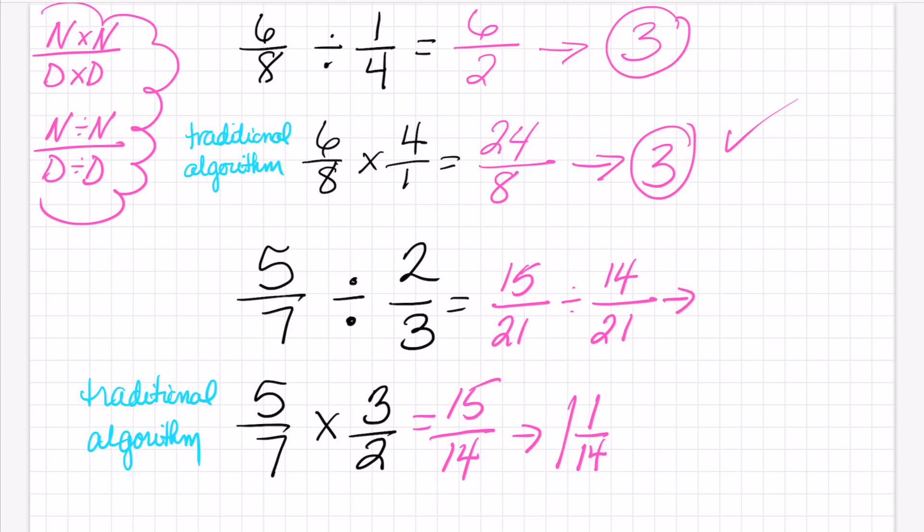And when I divide across, I know that 21 divided by 21 is 1. And in my top one, 15 divided by 14 is going to give me 1. And I'm going to have a remainder of 1 over 14. And this is where you kind of have to just remember you're thinking anything divided by 1 is just the same number. So I still have 1 over 14. So it is absolutely true.